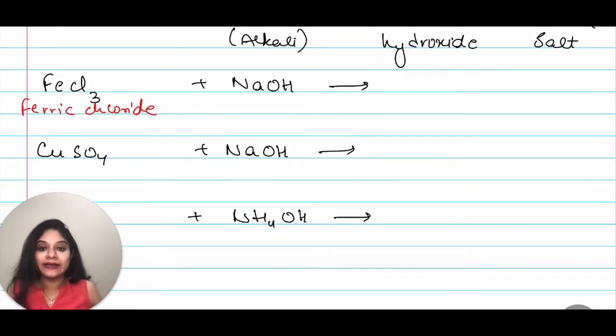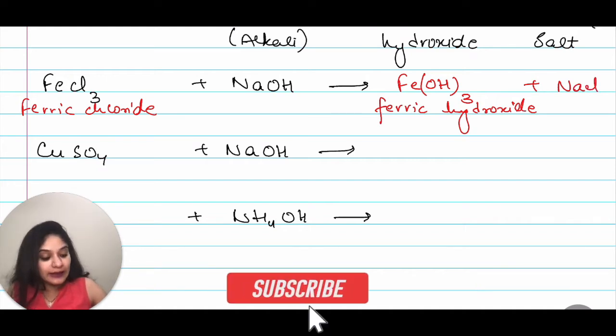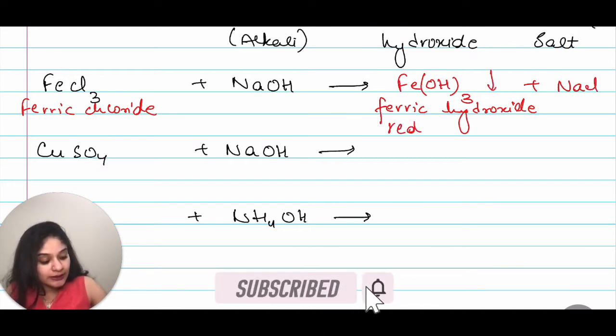We have FeCl3 plus NaOH that is ferric chloride. This will give us Fe(OH)3 that is ferric hydroxide plus NaCl and this ferric hydroxide is reddish brown in color. It is a reddish brown precipitate.